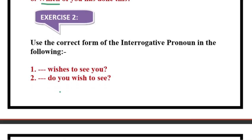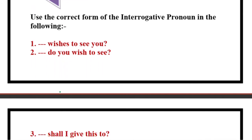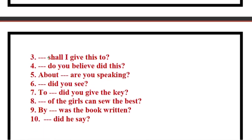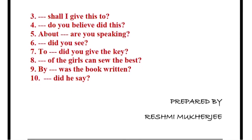Exercise two: use the correct form of the interrogative pronoun. This is fill in the blank form. Number one: 'Who wishes to see you.' Number two: 'Whom do you wish to see' — be careful, one uses 'who' and the other uses 'whom.' Number three: 'Whom shall I give this to.' Number four: 'Who do you believe did this.' Number five: 'About whom are you speaking.' Number six: 'What did you see.' Number seven: 'To whom did you give the key.' Number eight: 'Which of the girls can see you the best.'